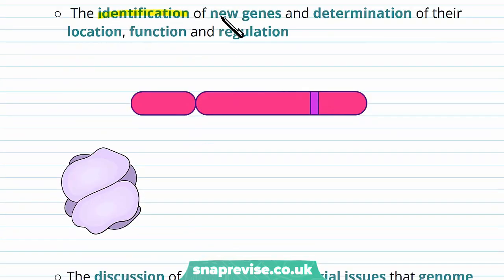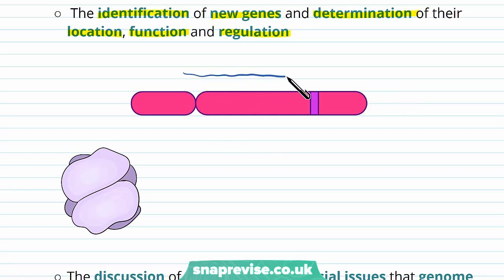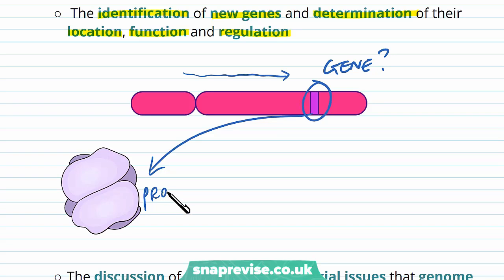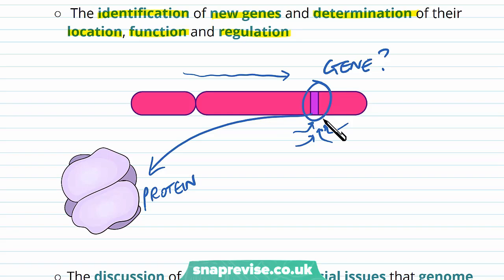It also had the aim of identification of new genes and determination of their location, function, and regulation. We wanted to look at the entire sequence and identify genes that we hadn't known about before. We might come across a particular gene, look at the sequence, look at what protein it codes for, and look at how the gene is regulated by other genes — how active it is, when does it come on, and what time in development does this gene become expressed.